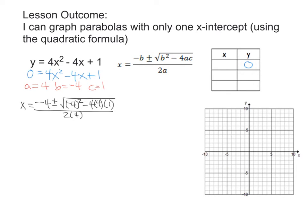Just putting the b value here and here, the a value here and here, and the c value here. So c is 1, the a value is 4, and the b value is negative 4.